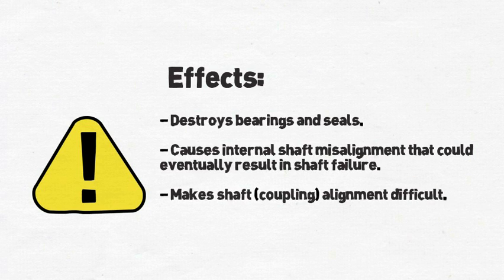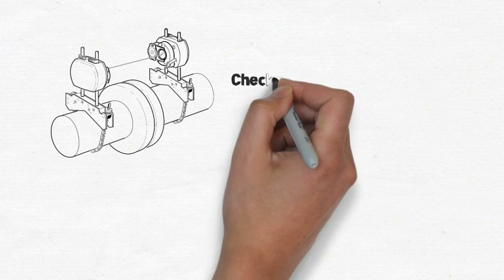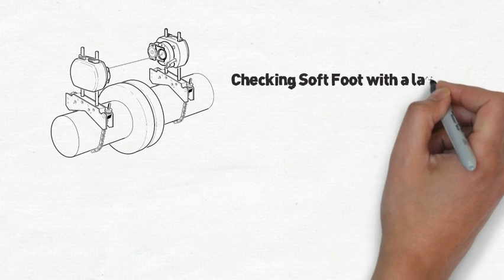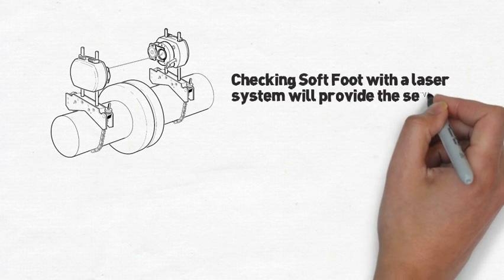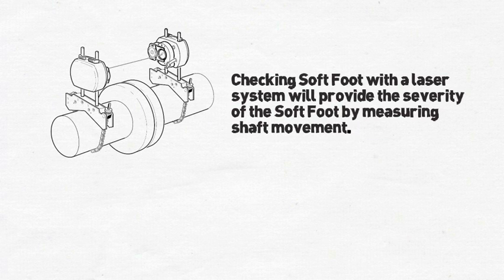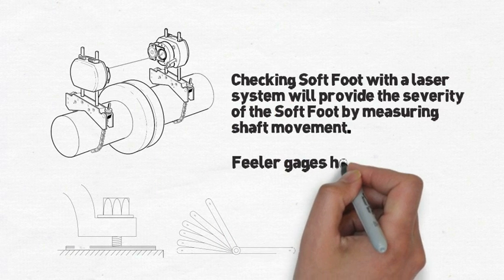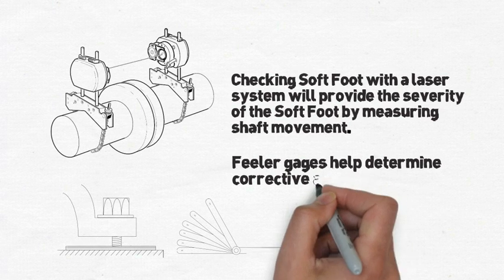Checking for soft foot with a laser system will provide the severity of the soft foot by measuring shaft movement as we loosen each hold down bolt. Once a foot is defined as soft, feeler gauges will help diagnose the best correction for it.